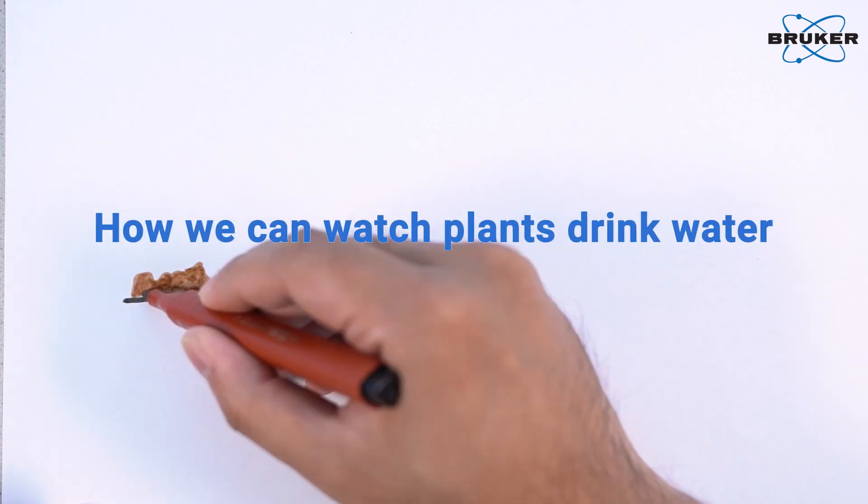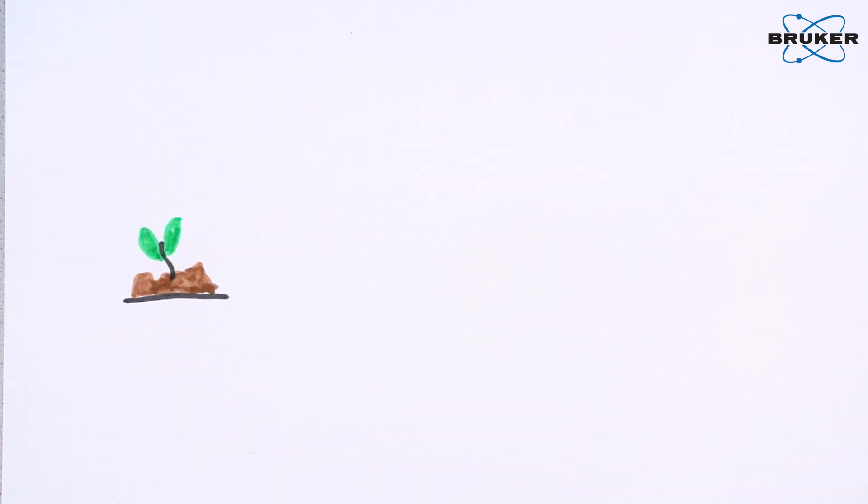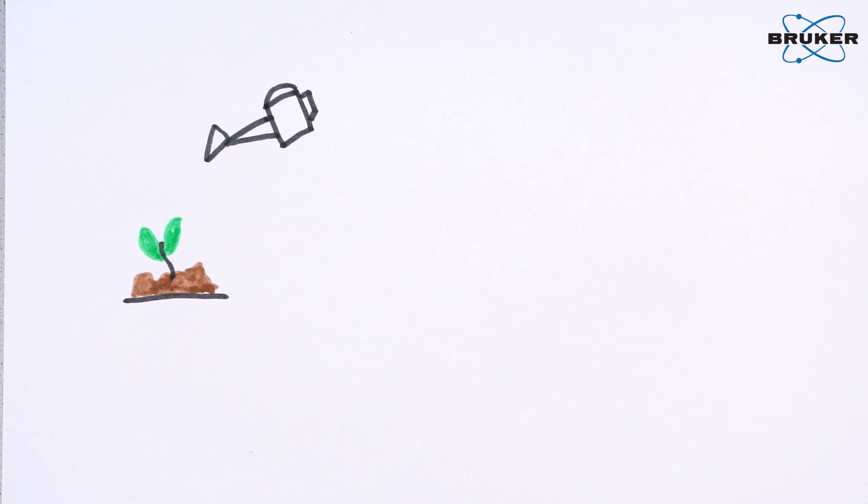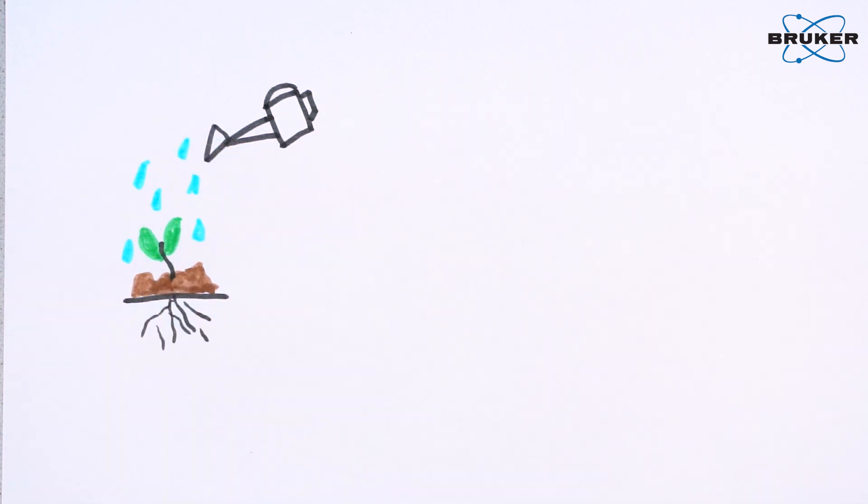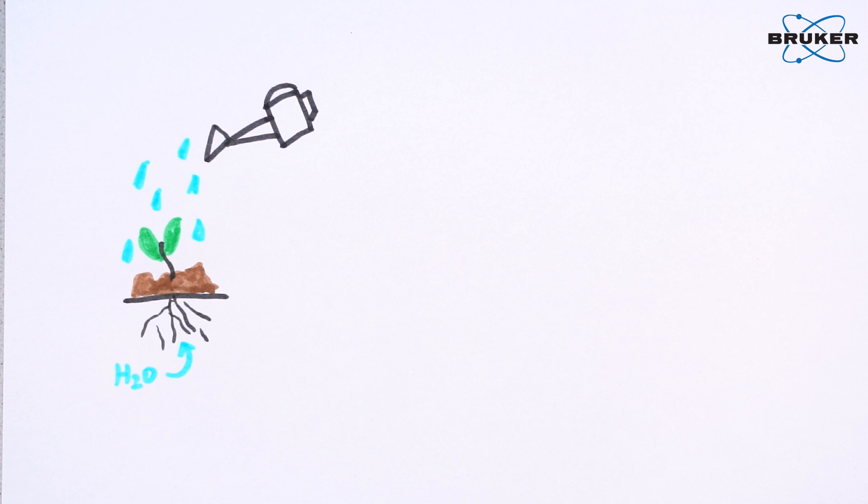While some crops still thrive in a drought, some are more sensitive to the amount of water they receive. To better understand this difference, scientists want to monitor the water uptake of roots without disturbing the plants.